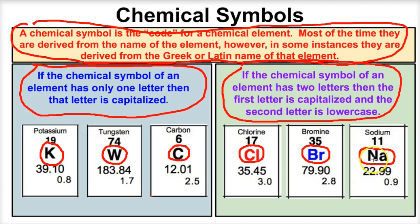Now, you might be wondering why the chemical symbol for sodium is N-A. Well, that has to do with the Greek or Latin word for that element, and that's what we're going to take a look at next — some of the chemical symbols for elements that are derived from Greek or Latin words.